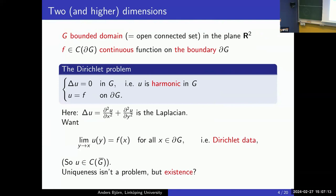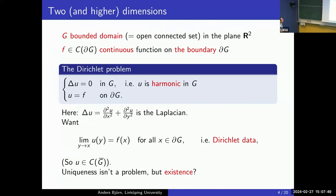Here is the expression for the Laplacian in two variables. What we mean is that the solution inside takes the boundary values f(x) as limits at all boundary points on ∂G. This is called Dirichlet data because we look at the value of the function, not its derivatives. So basically we want a solution that is continuous up to the boundary. Uniqueness is not a problem in this case — if you have two solutions, they must agree. But existence is not so clear.